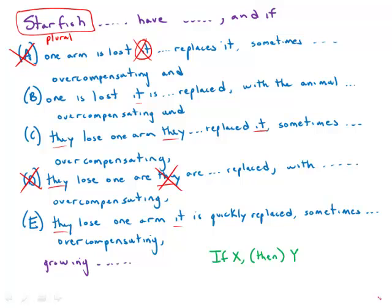The next thing we'll look at is in an if-then clause, it flows much better and is generally much clearer if X and Y have the same structure - that is, say they're both active or both passive. So notice that in A we have 'one arm is lost' - passive - 'it replaces it' - active, so we have a mismatch there. So that's another problem with A.